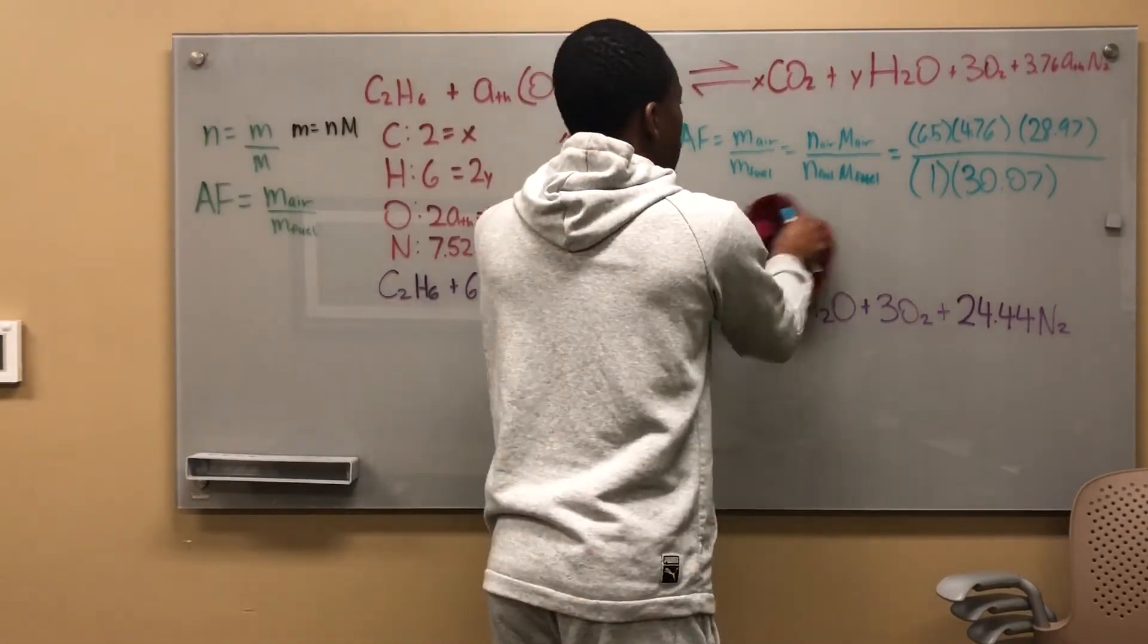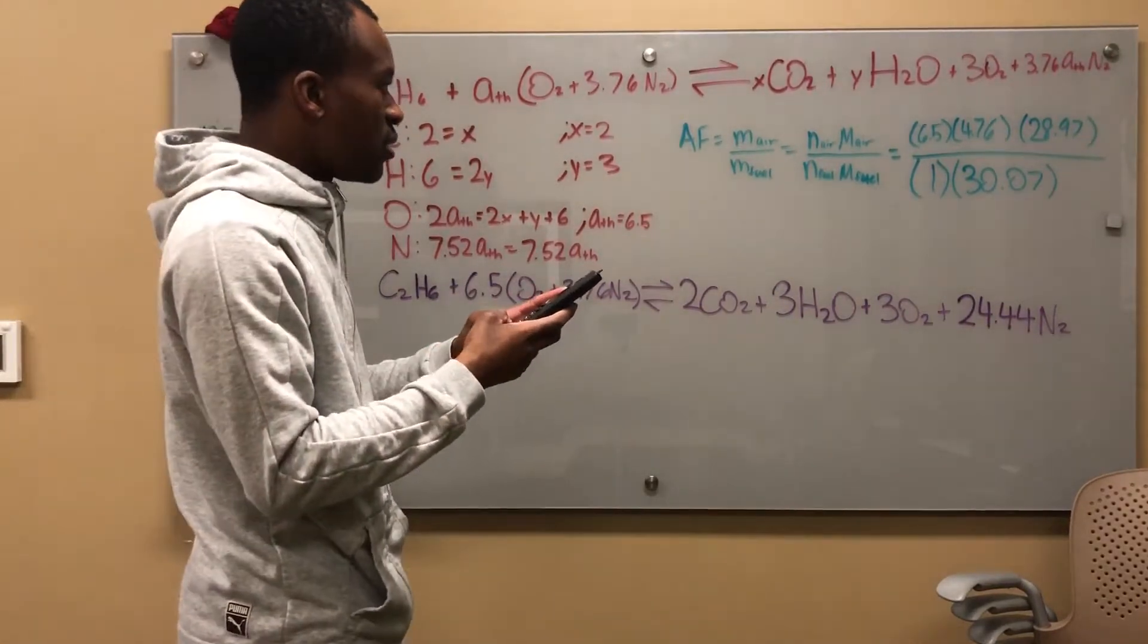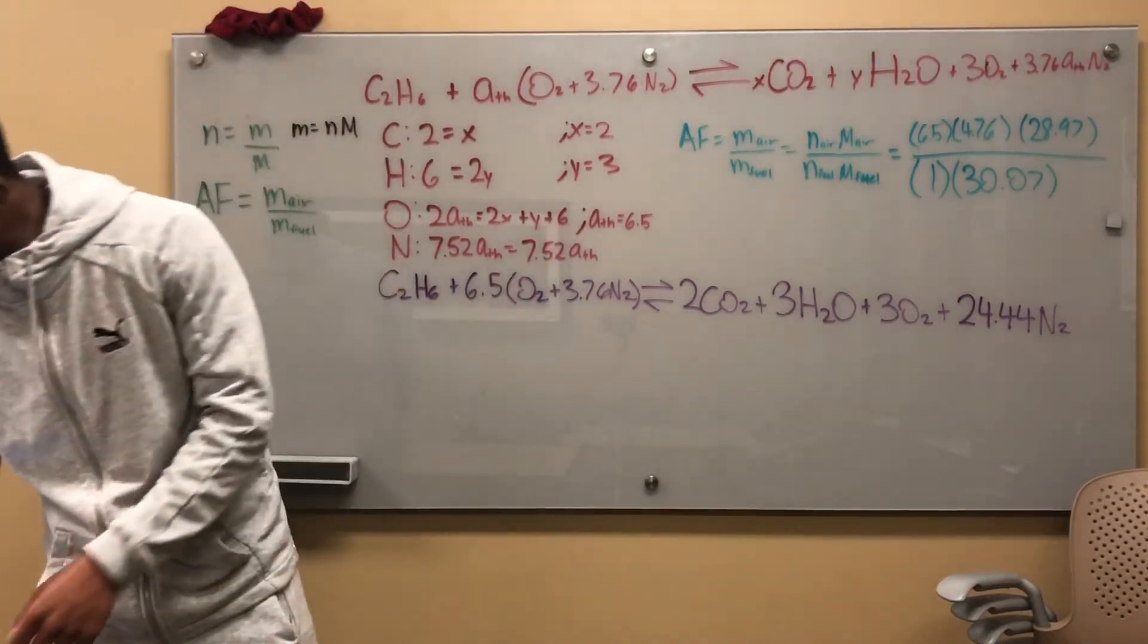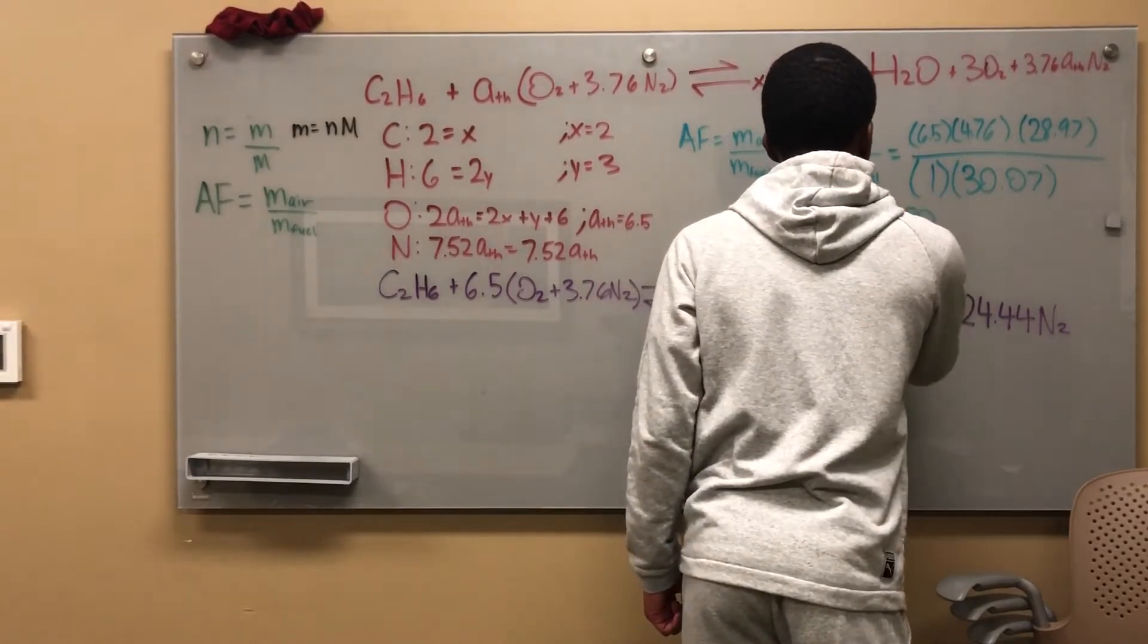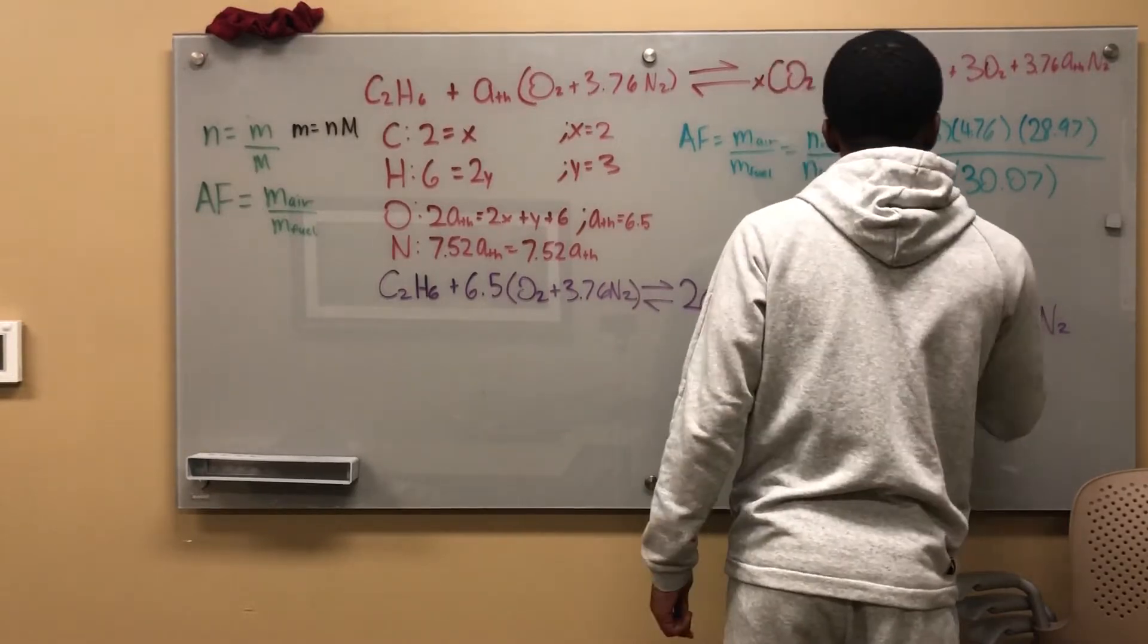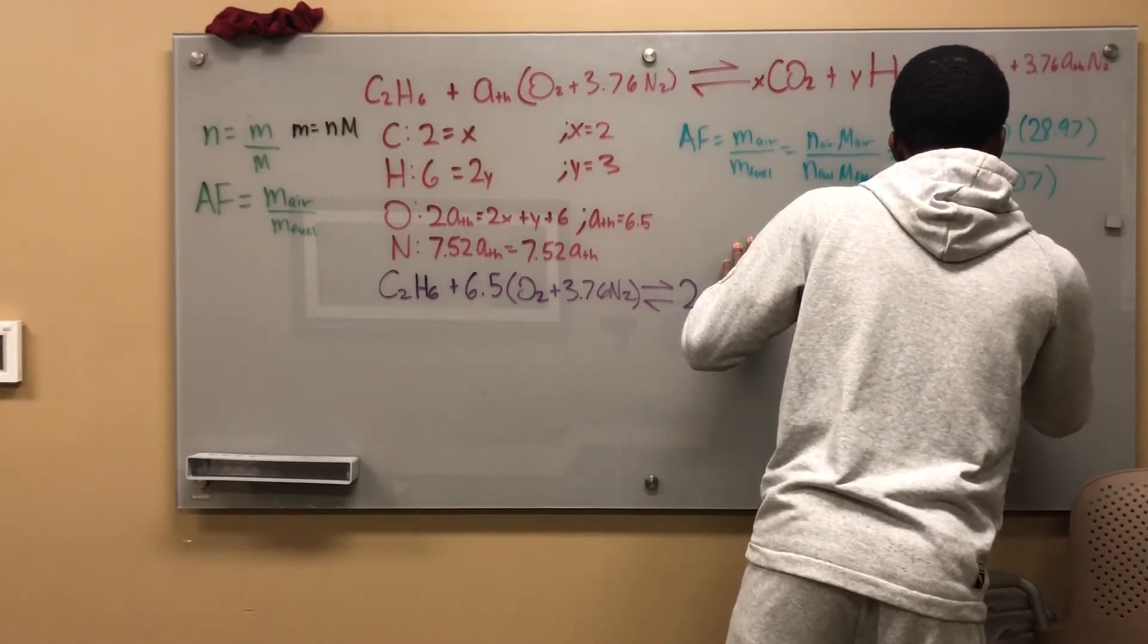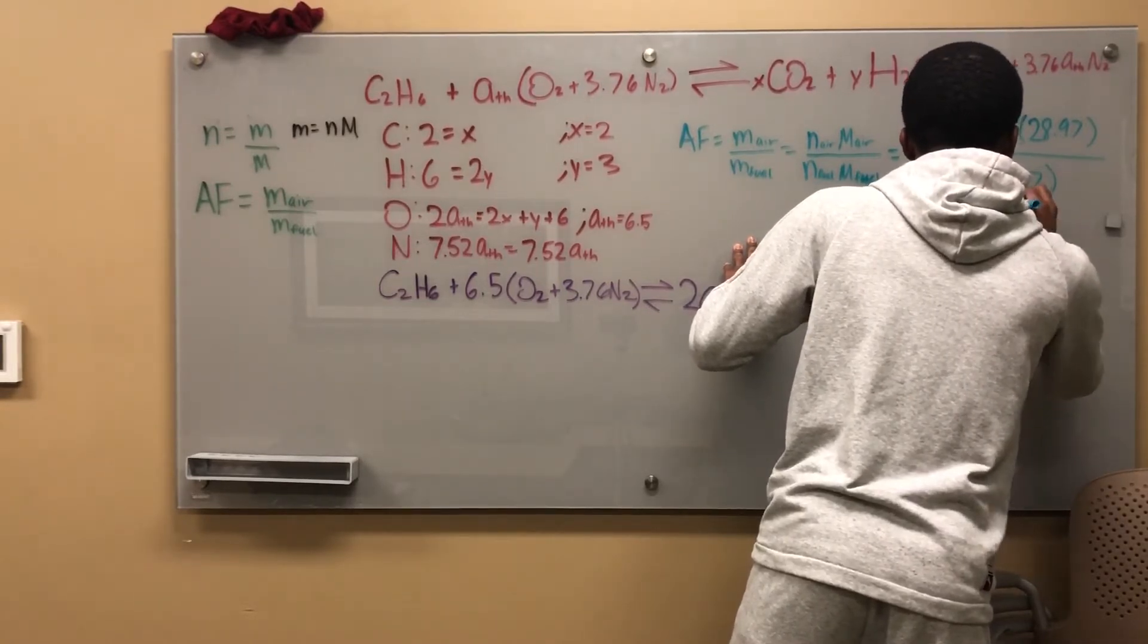So once I do the whole calculation, right, my air fuel ratio comes out to be 29.80. So AF is equal to 29.80. And I guess the units of AF would be kilograms of air, even though it's really a ratio, so it doesn't really have units, but if you really want to be specific, it's kilograms of air per kilogram of C2H6. I guess kilograms of fuel, if you want to write it like that. And that's what you end up getting.